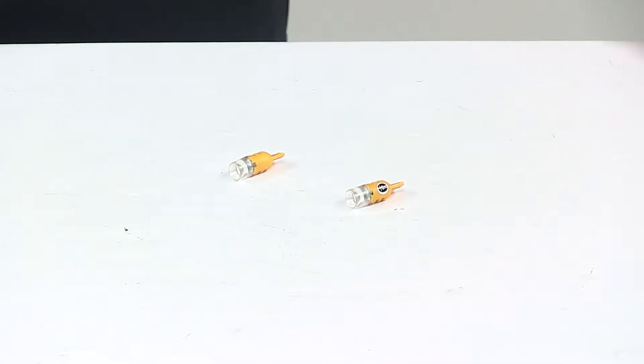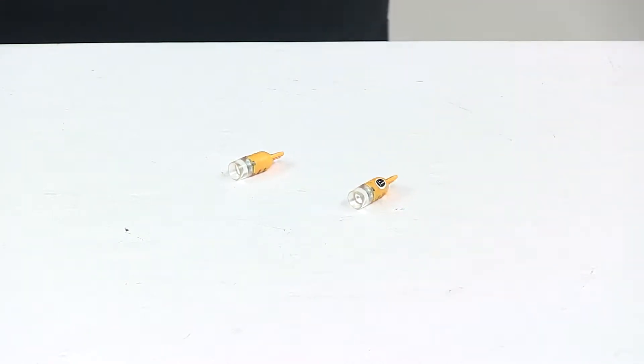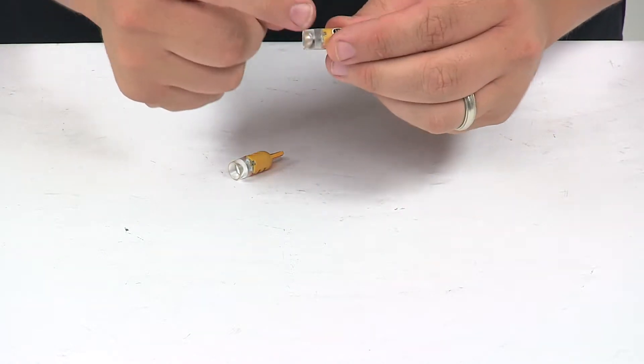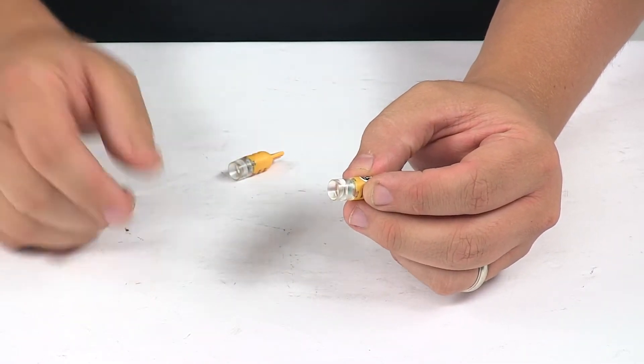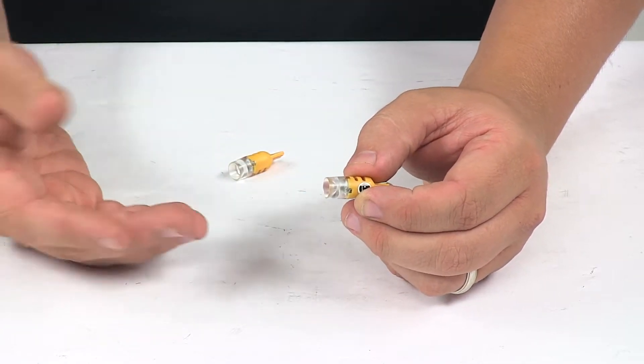Today we're taking a look at the Putco metal LED bulbs. These high-intensity LEDs offer more light when compared to factory bulbs. Light is emitted 360 degrees around the bulb, so that's really going to help increase the overall brightness, which is going to boost visibility.